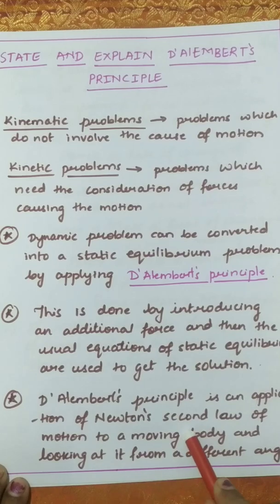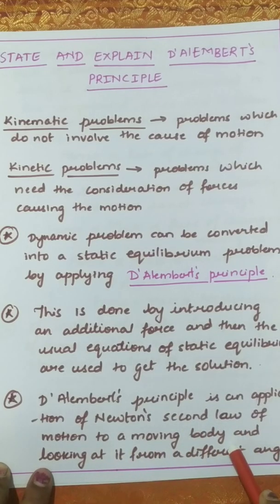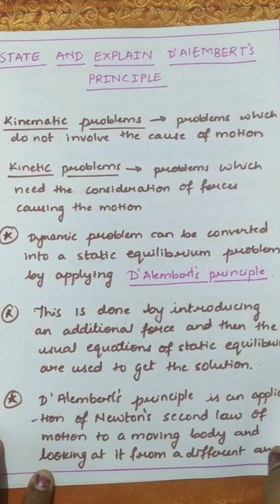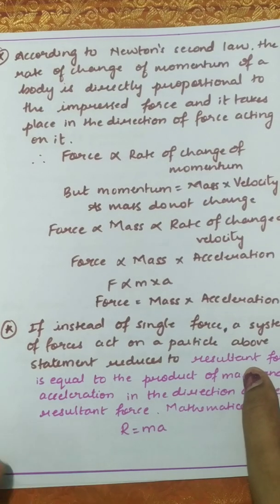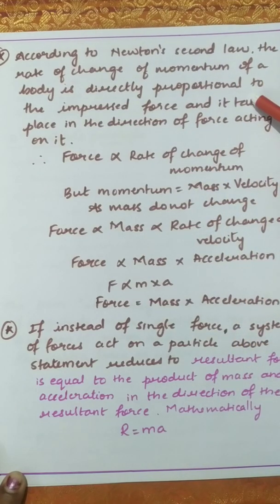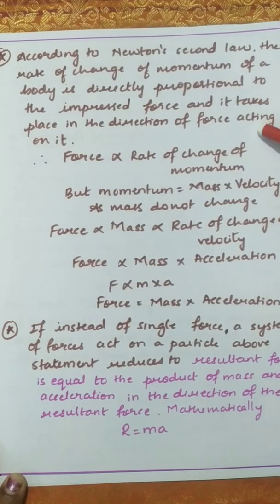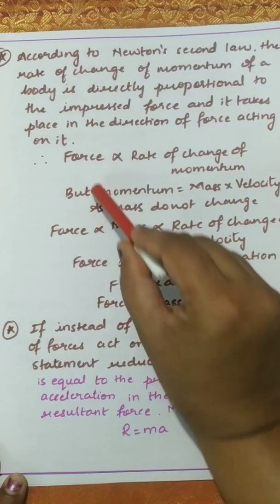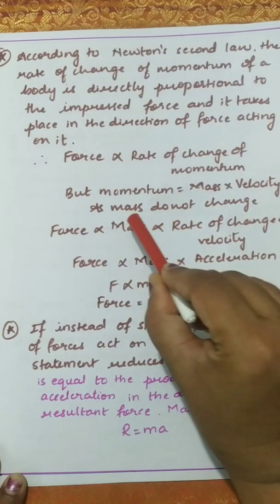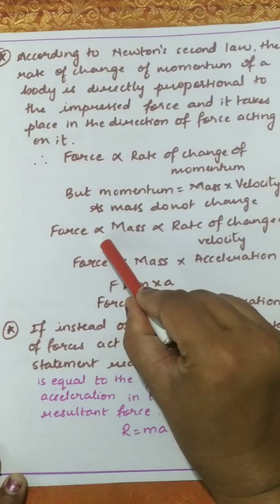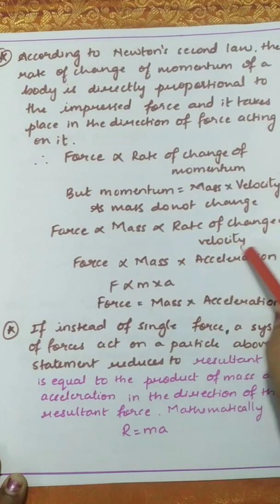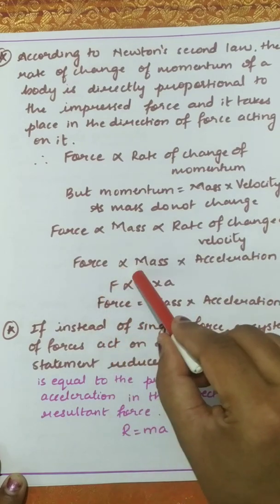D'Alembert's principle is nothing but an application of Newton's second law of motion to a moving body, but viewed from a different angle. Newton's second law states that the rate of change of momentum is directly proportional to the impressed force. Since momentum is mass times velocity, and mass is constant, force is proportional to mass times rate of change of velocity — that is, acceleration.